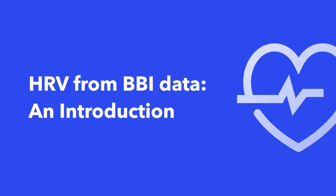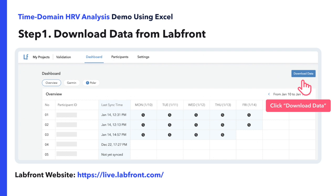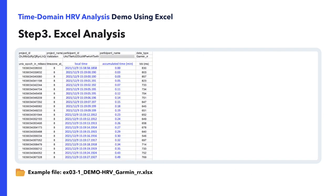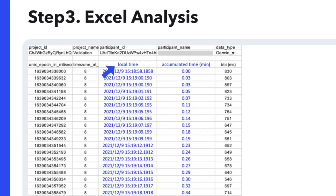First, we would head to our Labfront account to download the data. In the Garmin RR interval file, we would have access to a participant's BBI data. The data is offered in milliseconds and provided in UNIX time. In the first blue column, we converted the UNIX time to the local timezone, broken down by milliseconds.